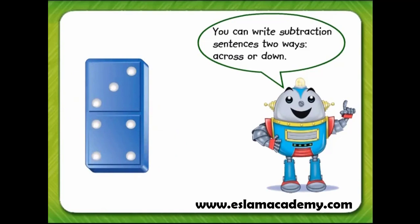If we turn a domino this way, it shows how we can write a subtraction sentence down. We know that there are seven dots, so we write the seven first. We subtracted three dots, so write the three below the seven with the minus sign in front of the three.